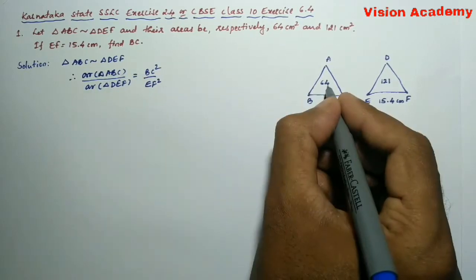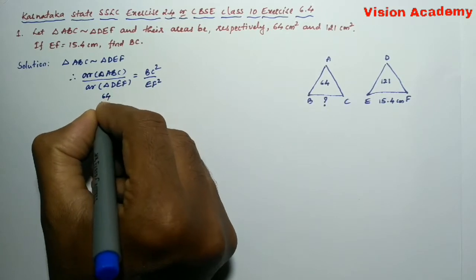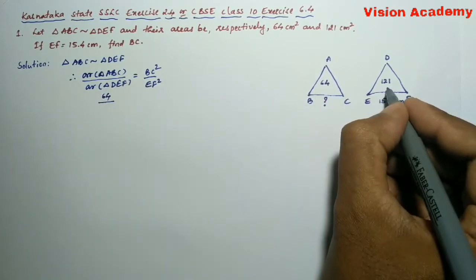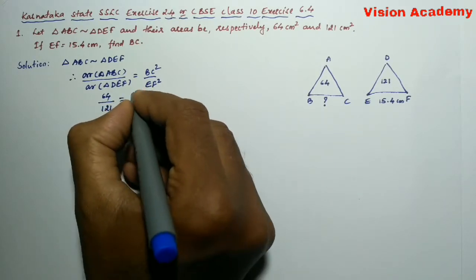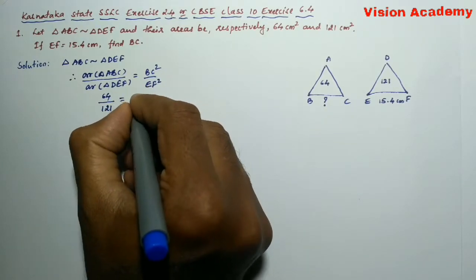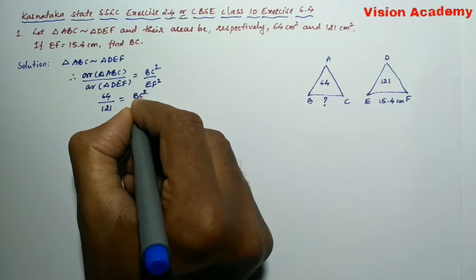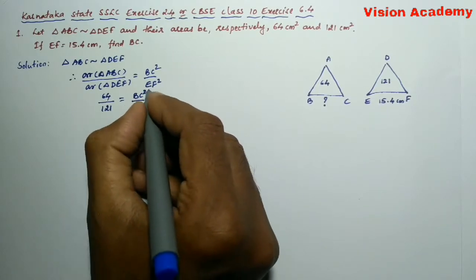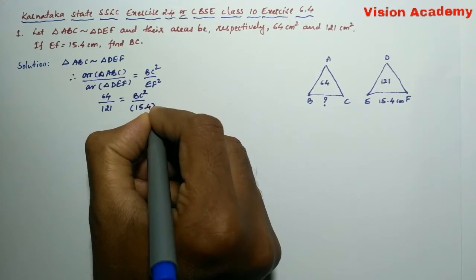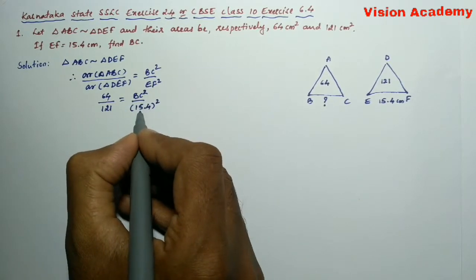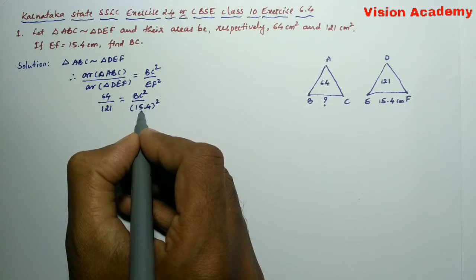Here area of triangle ABC is 64 divided by area of triangle DEF is 121. This equals BC² divided by EF². Let us write BC² as it is divided by EF². EF is 15.4, so EF² is 15.4².